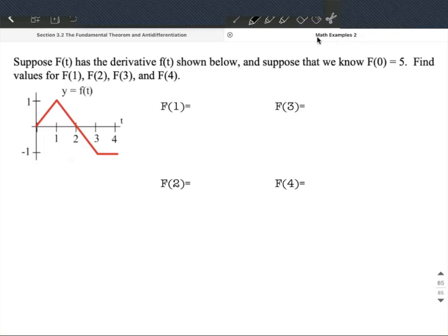To do this, I'll use the Fundamental Theorem of Calculus rearranged. To find F(1), that's F(0) plus the change from 0 to 1: the integral from 0 to 1 of f(t)dt. We know F(0) is 5.